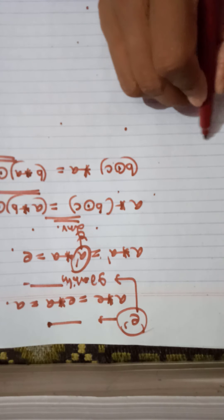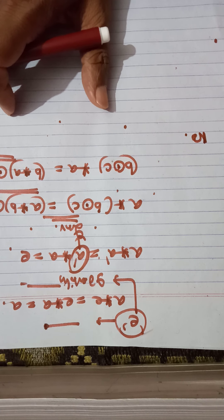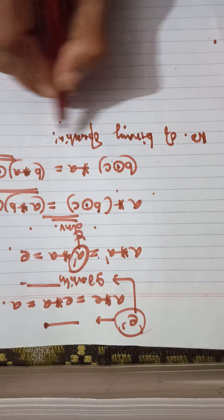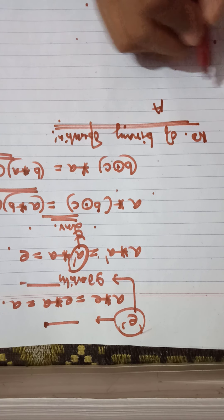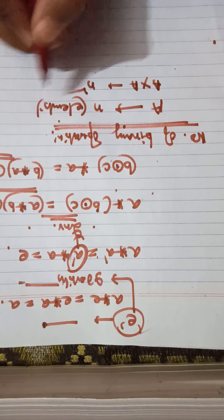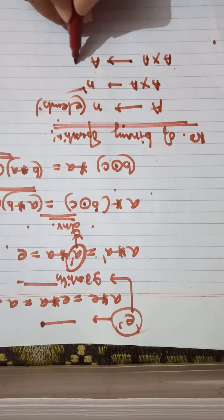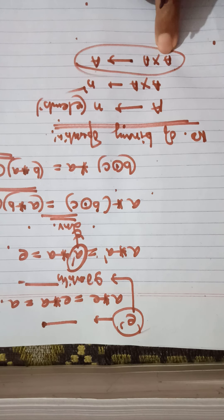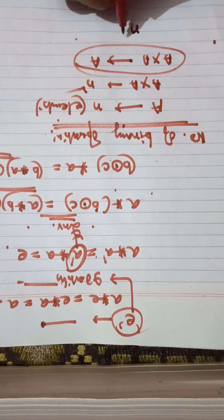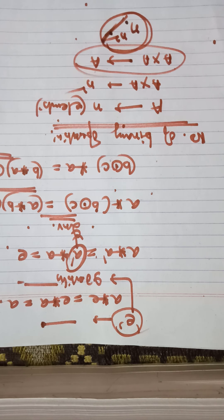For entrance exam questions: if a set contains N elements, then A cross A has N squared elements. The total number of binary operations on a set with N elements is N to the power N squared. This formula is very important for entrance exams.